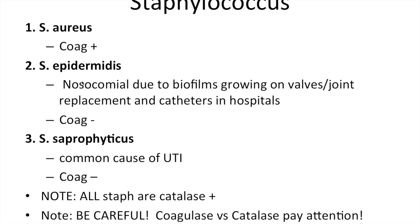Staph epidermidis — the only thing usually covered is that it's a nosocomial infection due to biofilms. It grows on valves, joint replacements, and catheters in hospitals, and it's coagulase negative. Staph saprophyticus is a common cause of UTI. If you see Staph saprophyticus on an exam, it's usually testing knowledge of it causing urinary tract infections, and it's coagulase negative.